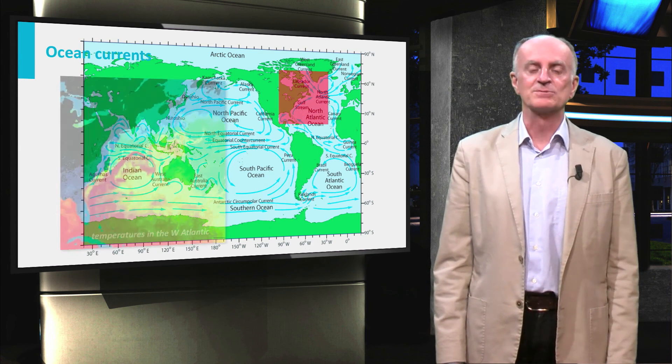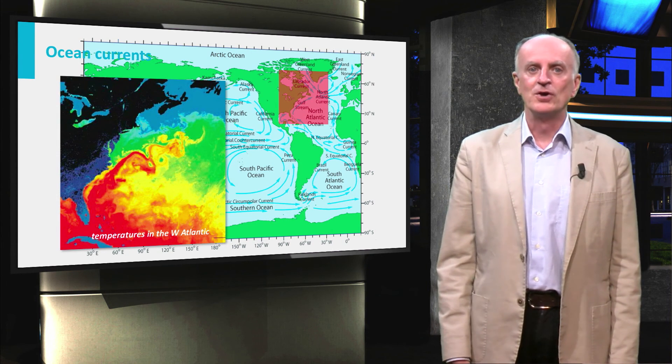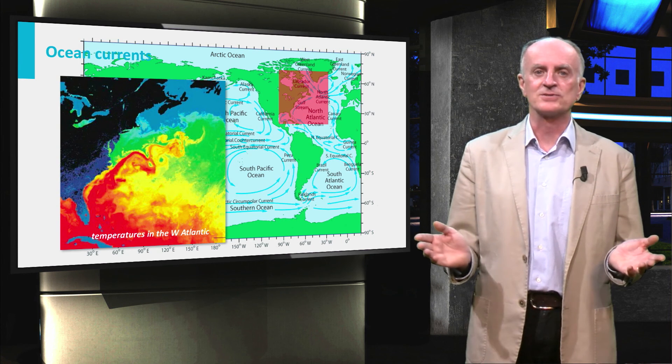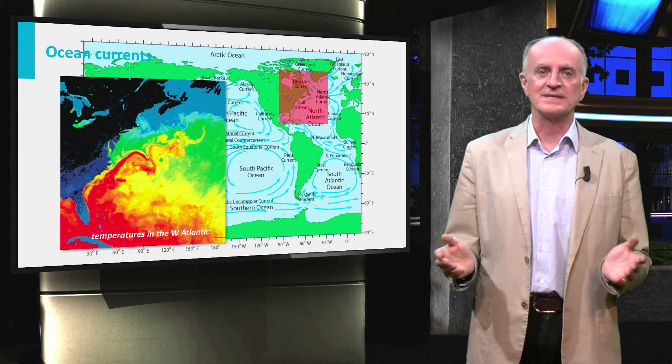The Gulf Current is one of the most famous examples. A profound knowledge of current patterns is of great importance. Think for instance of the search for the relics of the MH370 plane which disappeared recently in Southeast Asia.